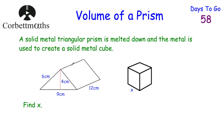Our next question: a solid metal triangular prism is melted down and the metal is used to create a solid metal cube. Find x, the side length of the cube. You may encounter volume questions in context like this — shapes melted down, containers being filled, or questions involving density. Since the volumes are equal, we first find the volume of the triangular prism, then cube root it to find the side length.